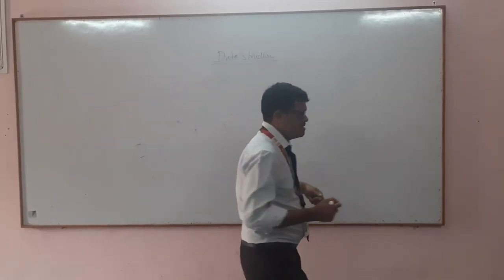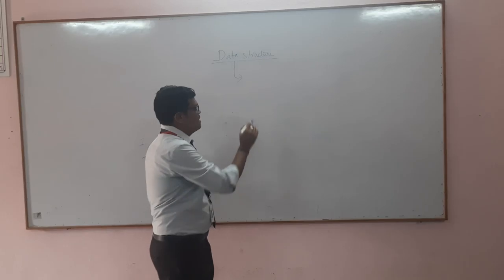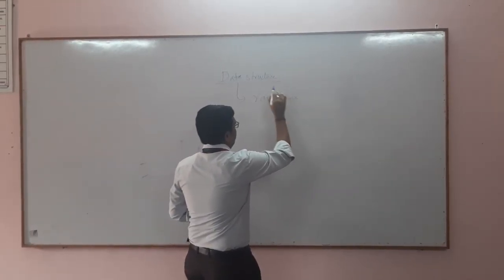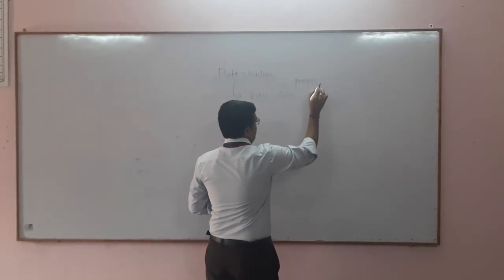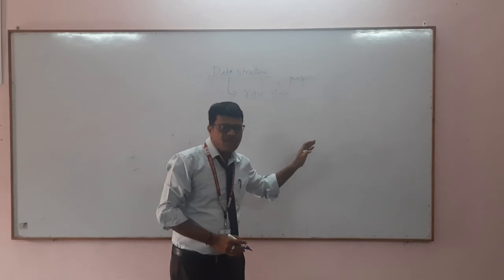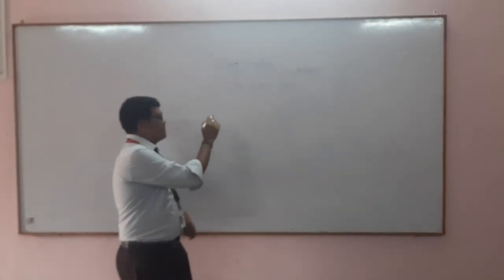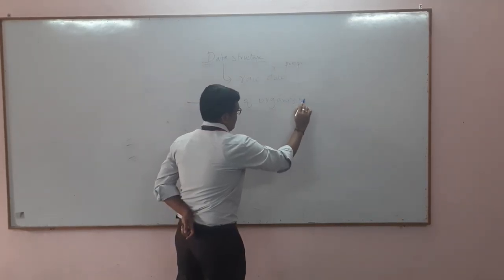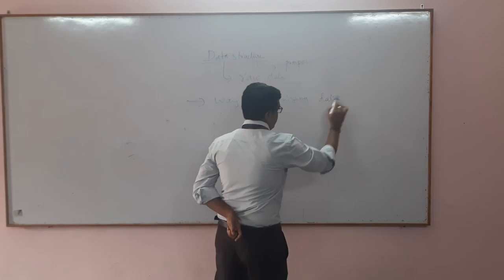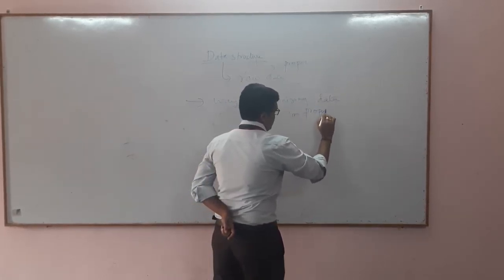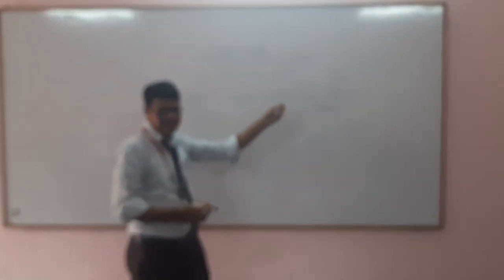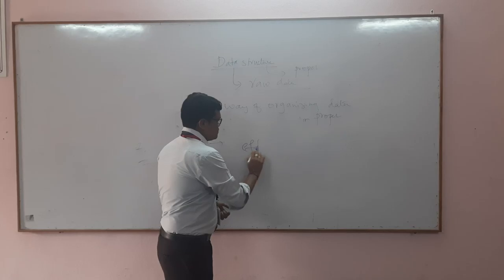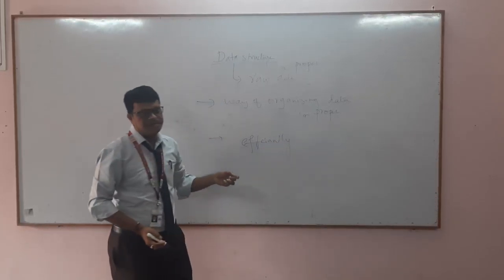So first of all, what is a data structure? Data is nothing but a raw fact, raw data. And what is structure? We need to keep data in a proper manner, in a proper position. So by these two words we can say that a data structure is a way of organizing the data in a proper manner. While we are organizing this data, we can work efficiently. So these are the two purposes of data structures.